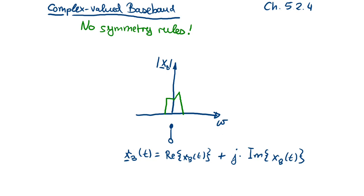Now we are going to take a step to the digital domain, and the computer doesn't have any problem with dealing with complex-valued signals. So now we can indeed use complex-valued signals. The complex-valued signal is composed of the real value and the imaginary value, and the computer does not have any problem dealing with these complex numbers and complex signals. An advantage is that the symmetry rules do not apply, and why this is an advantage you will see in the next slide.